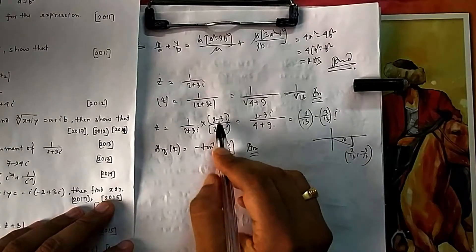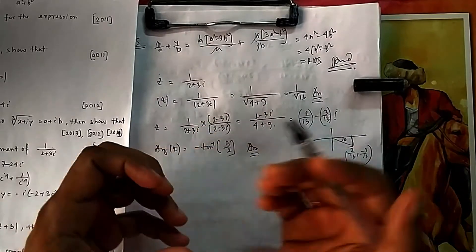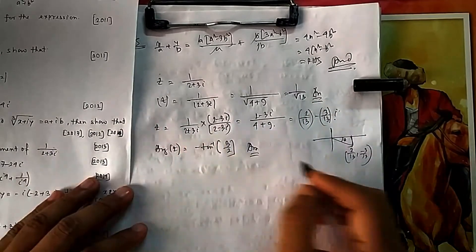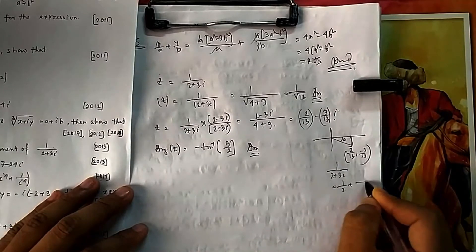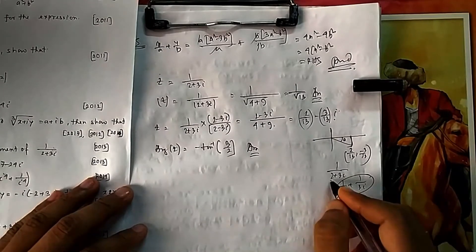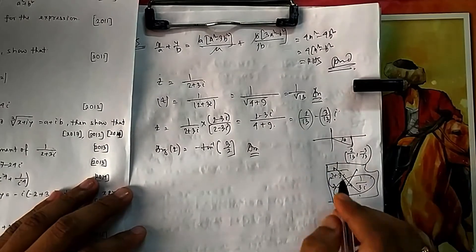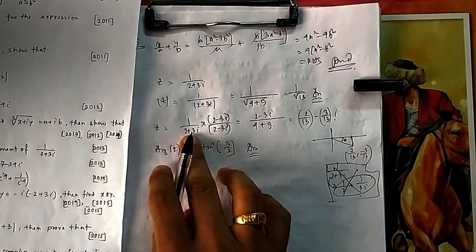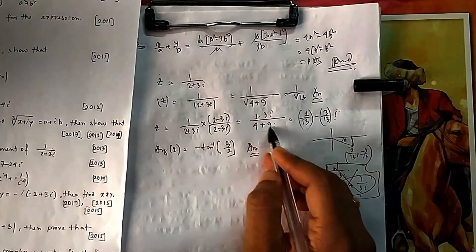The reason we multiply by the conjugate is that the argument is tan⁻¹(imaginary/real), so we need to identify the real and imaginary parts separately. You cannot split the denominator with i still in it — for example, 1/(2+3i) cannot be separated as 1/2 + 1/(3i). So we multiply numerator and denominator by the conjugate to remove i from the denominator.